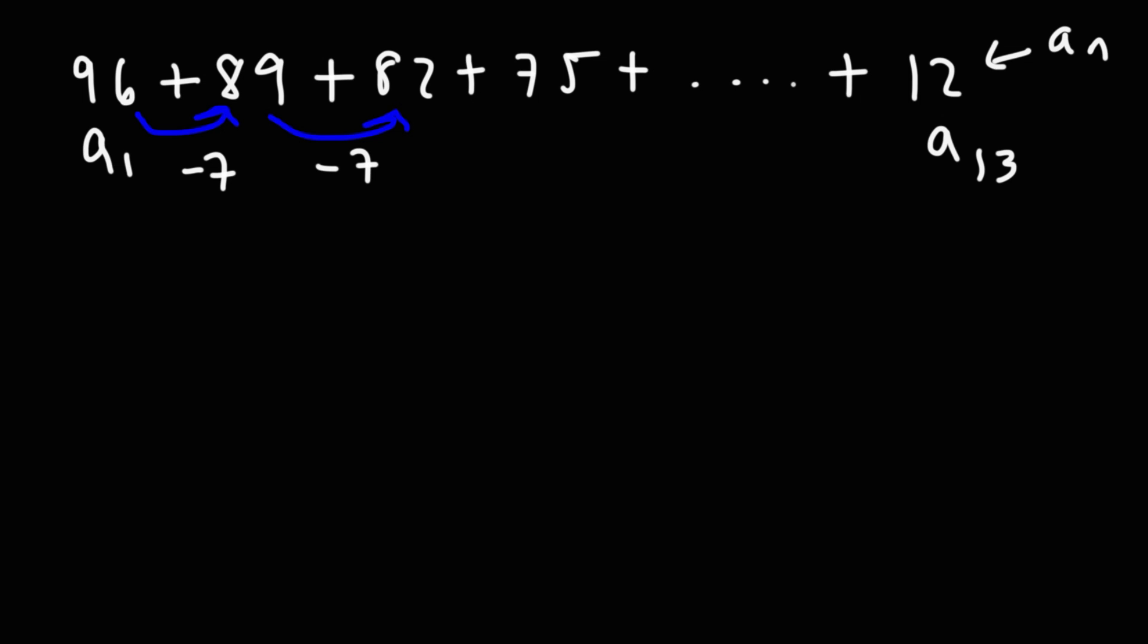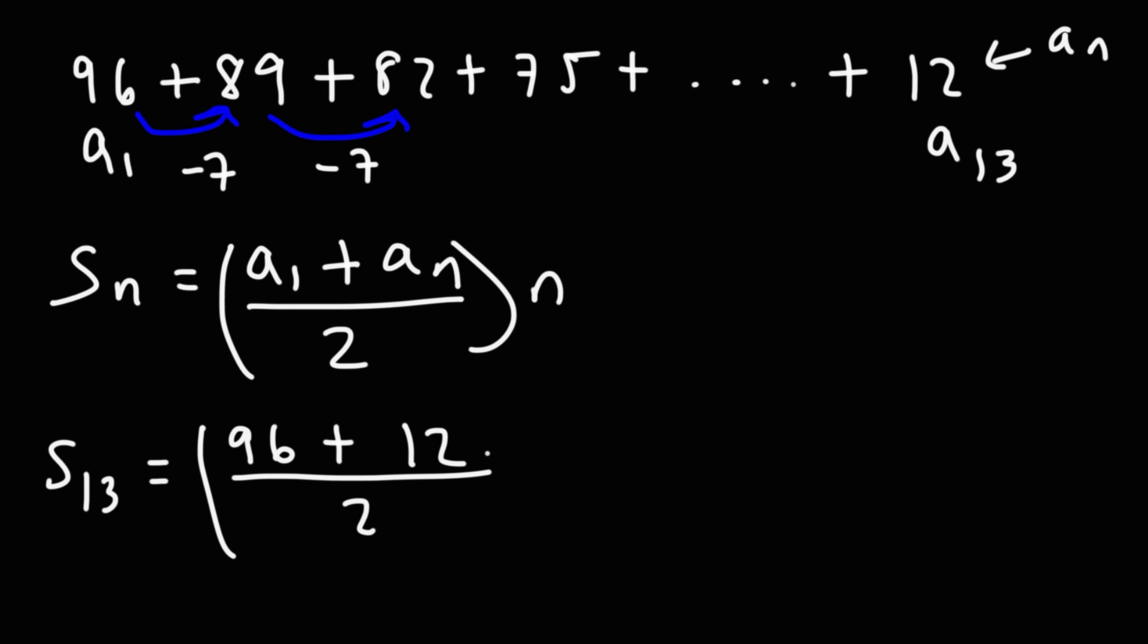So now that we have that, we can calculate the sum. So let's go ahead and let's use this formula. S sub n is a sub 1 plus a sub n divided by 2 times n. So we're looking for the sum of the first 13 terms or the partial sum. The first term is 96. A sub n or the 13th term is going to be 12. And n is 13.